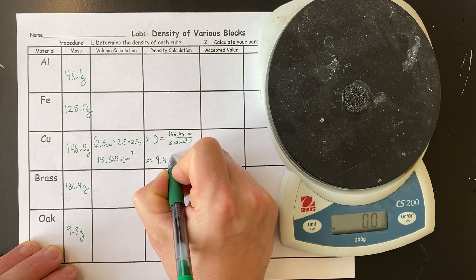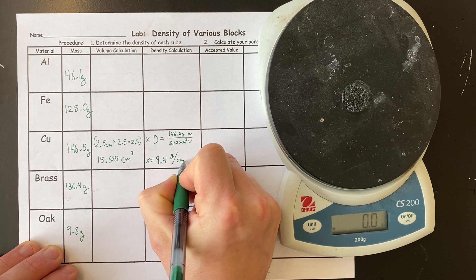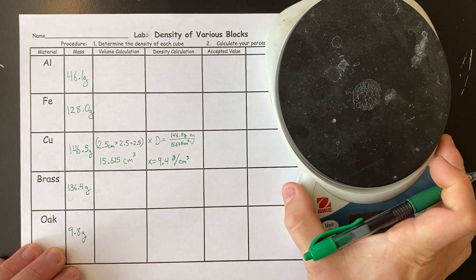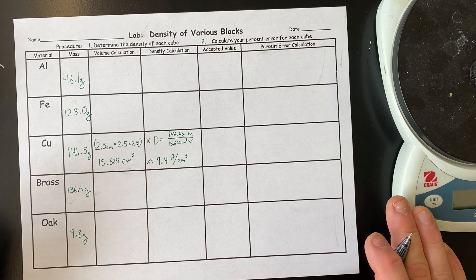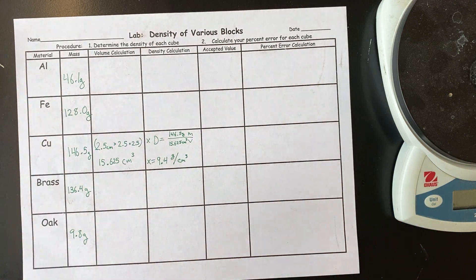9.4 grams per cubic centimeter. Now, for the accepted values. Here's the trick. The accepted values we need to get off of this page here.